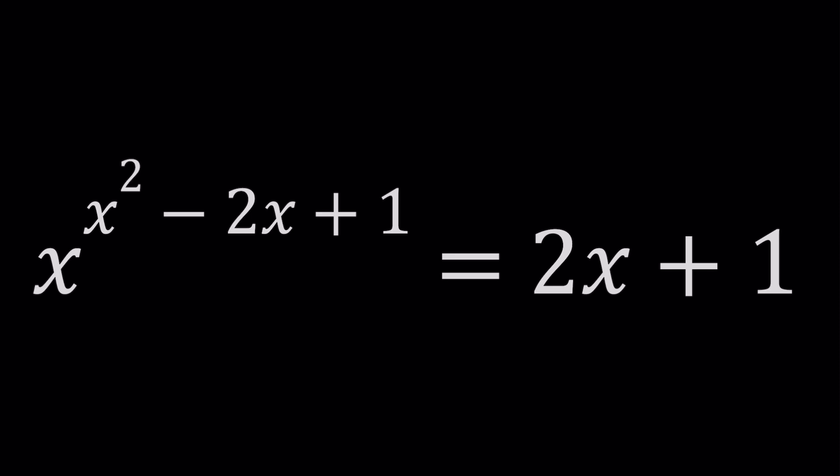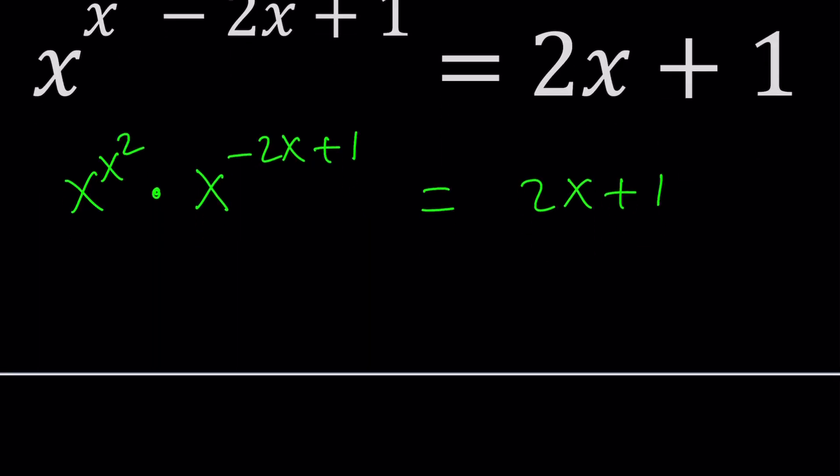So that might be a little misleading because I'm going to split it up into two pieces on the left-hand side. Notice that we have 2x plus 1 on the right-hand side, and we want it to be accompanied by something somewhat similar to it. So let's go ahead and do this first. Separate the x to the power x squared into this, and the other factor is going to be x to the power negative 2x plus 1. So when you multiply, you add the exponent and you get the expression.